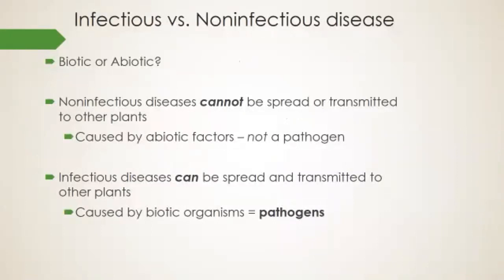Diseases can be infectious or non-infectious. They can be caused by a biotic — living — organism, or by the environment, which would be abiotic. Non-infectious diseases cannot spread or be transmitted to other plants, and they're caused by non-living or non-pathogenic factors. Examples include pesticide damage, storm damage, stress, nutrient deficiency, and too much or not enough water. These abiotic issues fall under the category of diseases, but they're environmental.